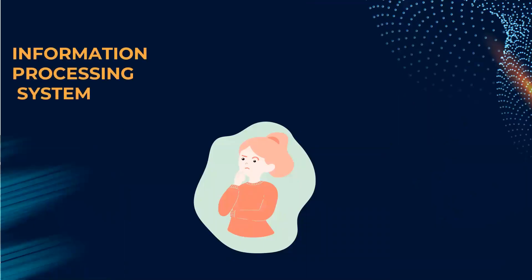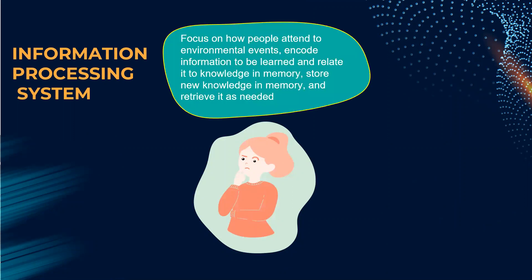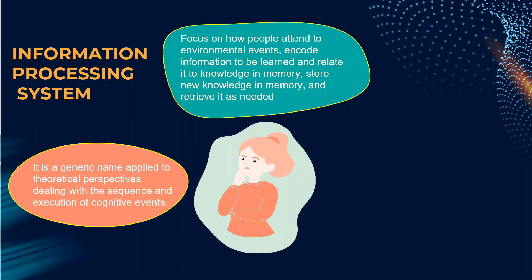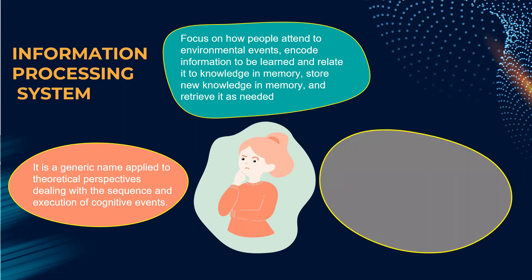Now let's start with the definition of the information processing system. It focuses on how people attend to environmental events, encode information, store new knowledge in memory, and retrieve it as needed. Basically, it is a generic name applied to theoretical perspectives dealing with the sequence and execution of cognitive events.